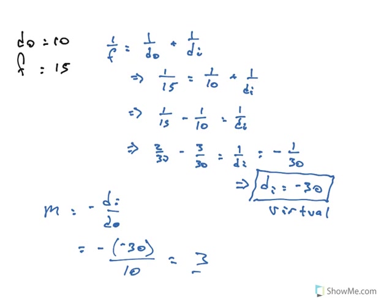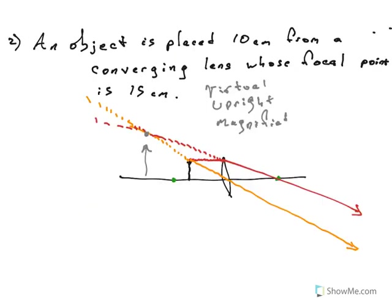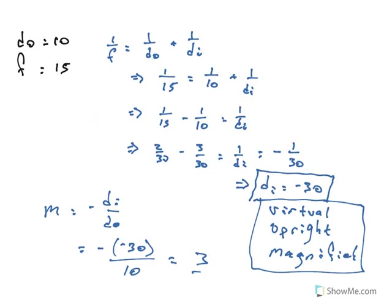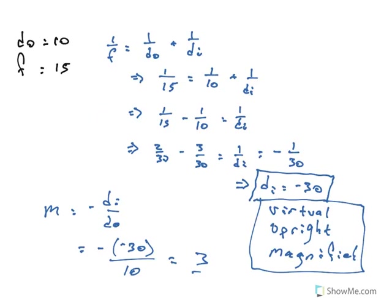The magnification is positive 3, so the image is upright, and the number itself is bigger than 1, so it's magnified. Comparing to the drawing: virtual because the image is on the left, upright because the arrow is pointing upwards, and magnified because the gray arrow is bigger than the black arrow. The image is negative 30 centimeters. The focal point is at 15, and the image is about twice as far, so negative 30 looks right. Analytically, it all works out.